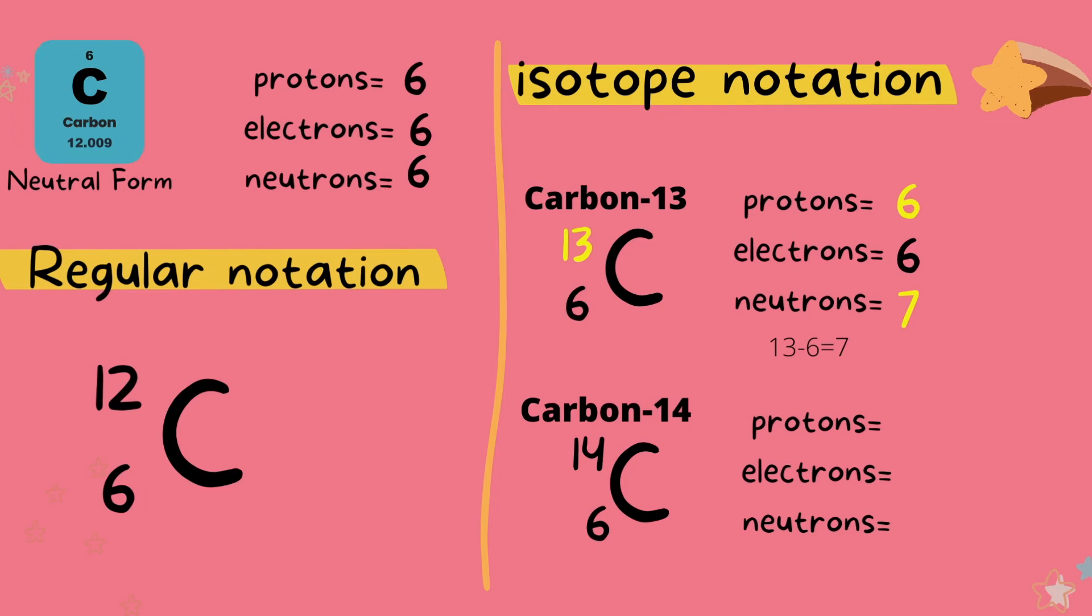Looking at carbon-14, we have 6 protons, 6 electrons, and to find the number of neutrons we subtract 6 from 14 and we get 8 neutrons. So the 6 protons and 8 neutrons is what gives us the mass number of 14.